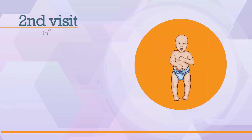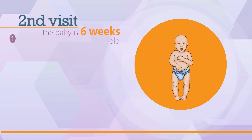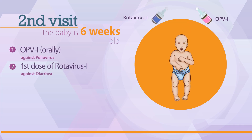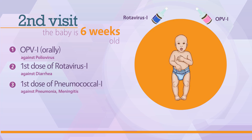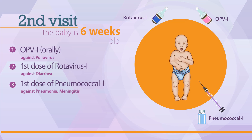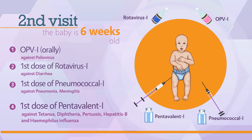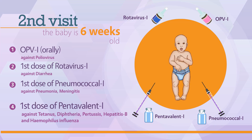The second visit is scheduled when the baby is 6 weeks old. On this visit, the baby will receive OPV1 vaccine orally, the first dose of Rotavirus 1 vaccine given orally for protection against diarrhea, the first dose of Pneumococcal 1 vaccine administered intramuscularly in the left thigh for protection against pneumonia and meningitis, along with the first dose of Pentavalent 1 vaccine administered intramuscularly in the right thigh for protection against tetanus, diphtheria, pertussis, hepatitis B, and haemophilus influenza.